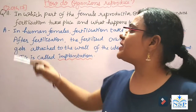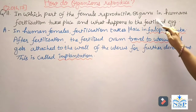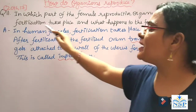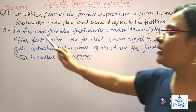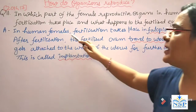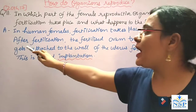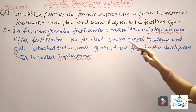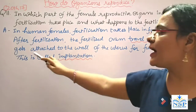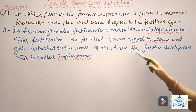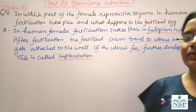The next question is: in which part of the female reproductive organ in humans does fertilization take place, and what happens to the fertilized egg? In females, fertilization takes place in the fallopian tubes. After fertilization, the fertilized ovum travels to the uterus and gets attached to the wall of the uterus for further development. This is called implantation.